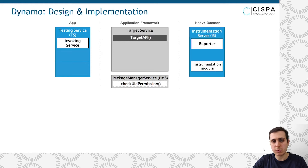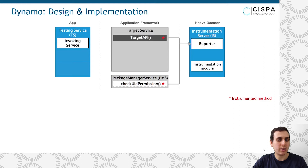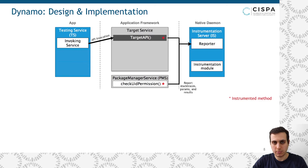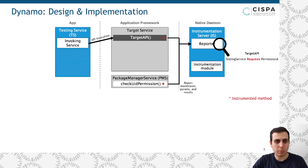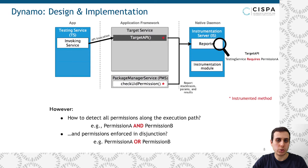To precisely capture this permission check, we use a dynamic instrumentation framework called Frida, which is used to instrument the target API and the permission checking API from the package manager service, such that they would report the stack traces, call parameters, and return values whenever they are called. When the testing service calls the target API, the instrumented APIs will report all call details and results to the reporter module at the instrumentation server. By analyzing all this information, we can precisely associate the call to the target API with the required checked permission. For this approach to work, we needed to be able to detect permissions that are enforced in conjunction as well as in disjunction of each other.